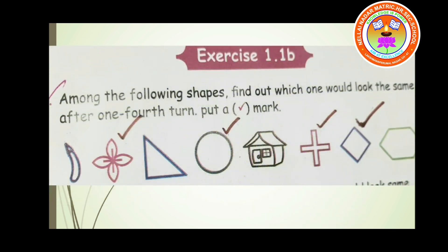Now the answer: among the following shapes, find which would look the same after one-fourth turn and put a tick mark. The first shape doesn't look the same — no tick. The flower looks the same — tick. The triangle won't be the same, but the circle is the same — tick. The house won't be the same, but the cross is the same — tick. The diamond looks the same — tick. But the hexagon doesn't look the same.